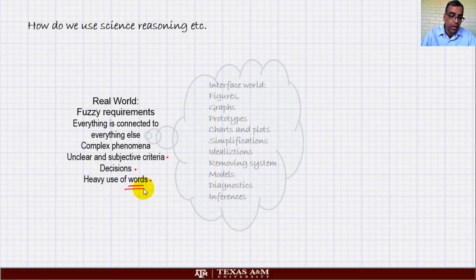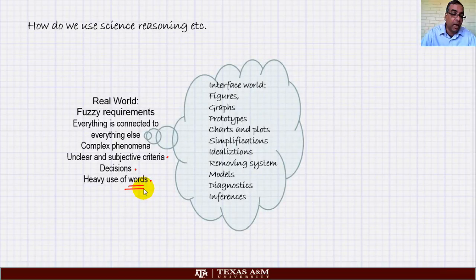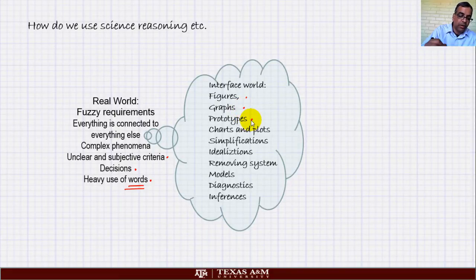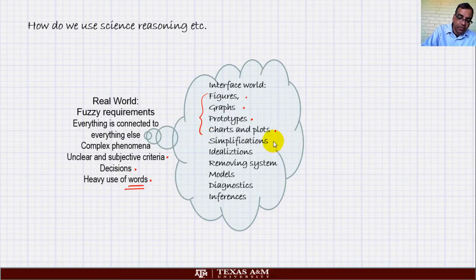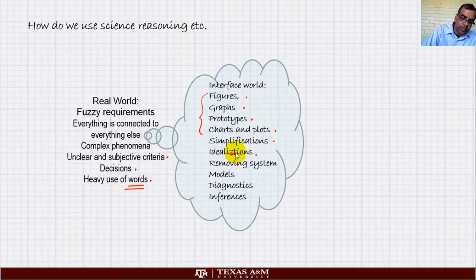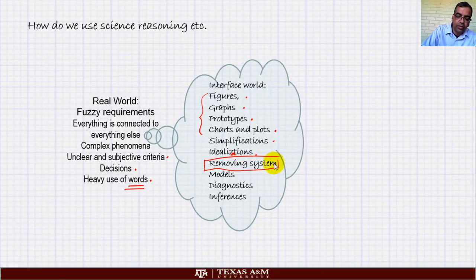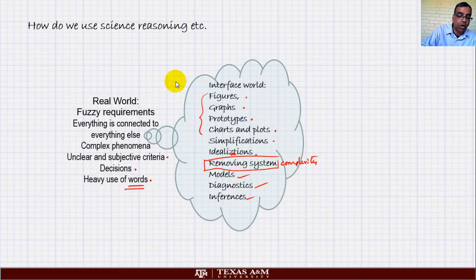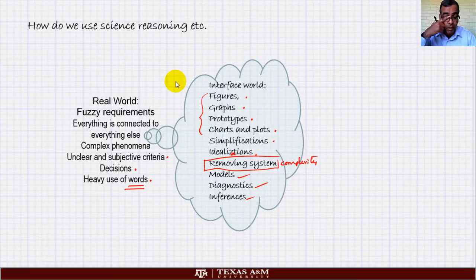So what do we do? We convert all of these real world requirements into figures, graphs, prototypes, charts and plots. You can see lots of specific things. We do simplifications, we do idealizations, we simplify the system by removing complexities. We do models, we do diagnostics, we do inferences. All of them sit in the interface world. In order to utilize all of this you have to do one more step.